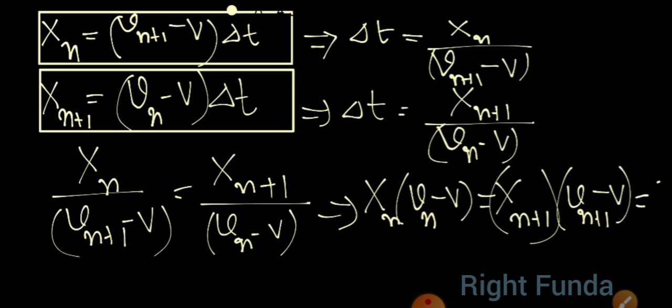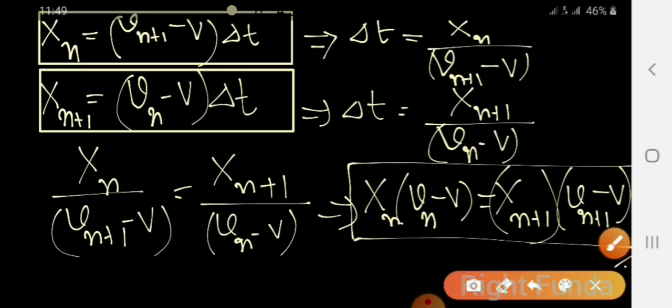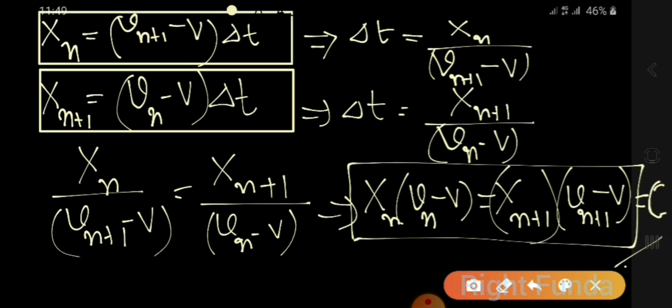This product xₙ·(vₙ − V) is a constant quantity at every collision — the remaining distance to the wall multiplied by the difference between ball velocity and block velocity after each collision. We need to find the value of this constant C.